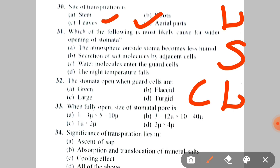Next: which of the following is most likely for wider opening of stomata? A. Atmosphere outside becomes less humid, B. Secretion of salt molecules by adjacent cells, C. Water molecules enter the guard cells, D. Night temperature falls. The correct answer is C — when water molecules enter the guard cells, the stomata will open.